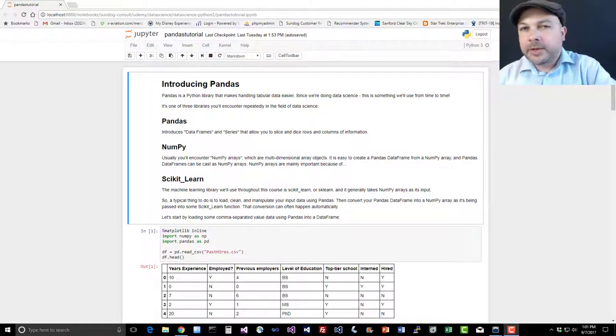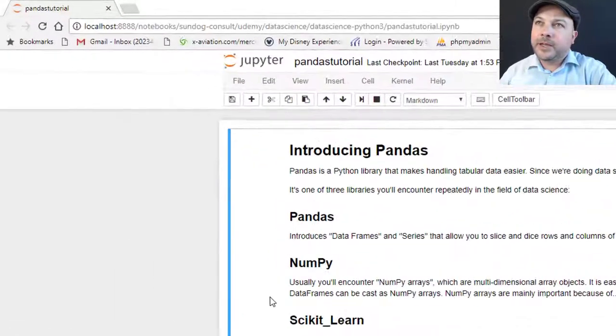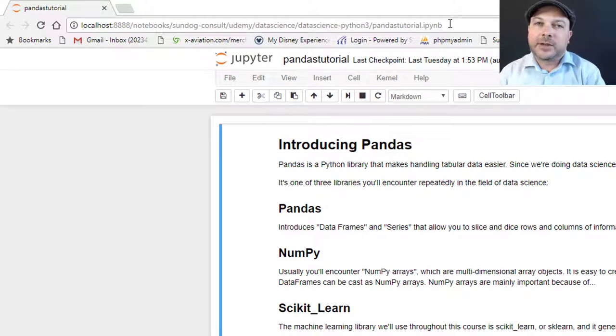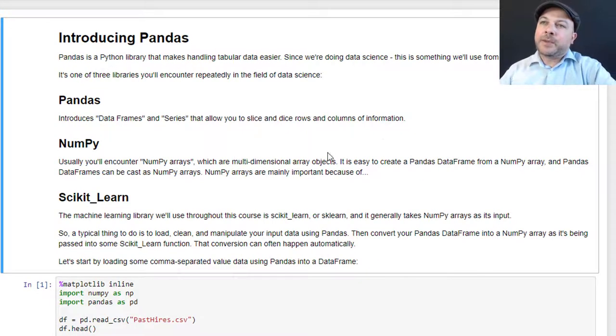So now that you have a brief introduction to the Python programming language, let's talk a little bit about the Pandas library, a library of Python functions that you'll be using a lot as a data scientist. To follow along with me here, go ahead and find the pandastutorial.ipynb file that should be inside your course materials. Go ahead and double click that and it should show up in your browser just like this. You should be seeing something like this at this point.